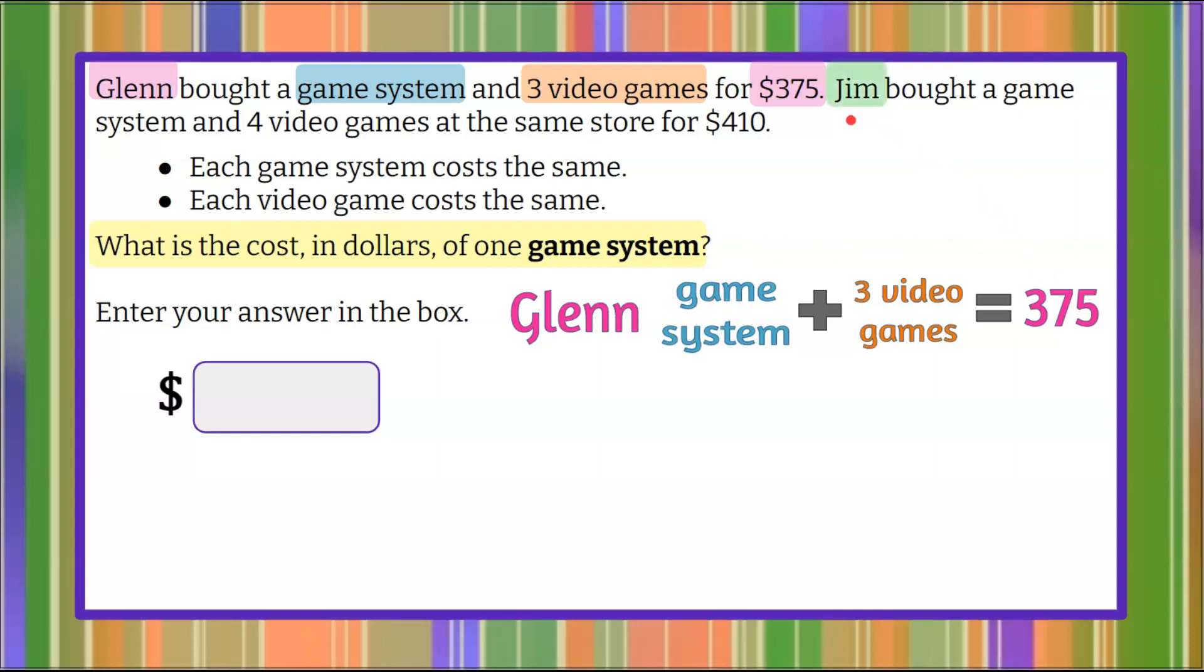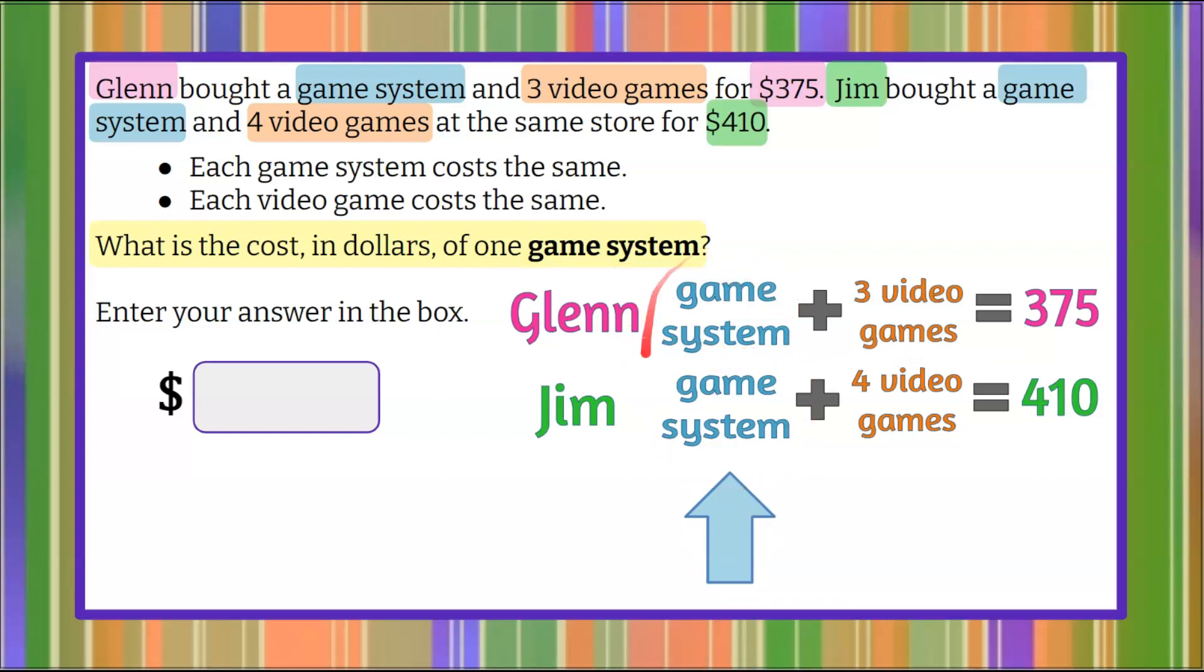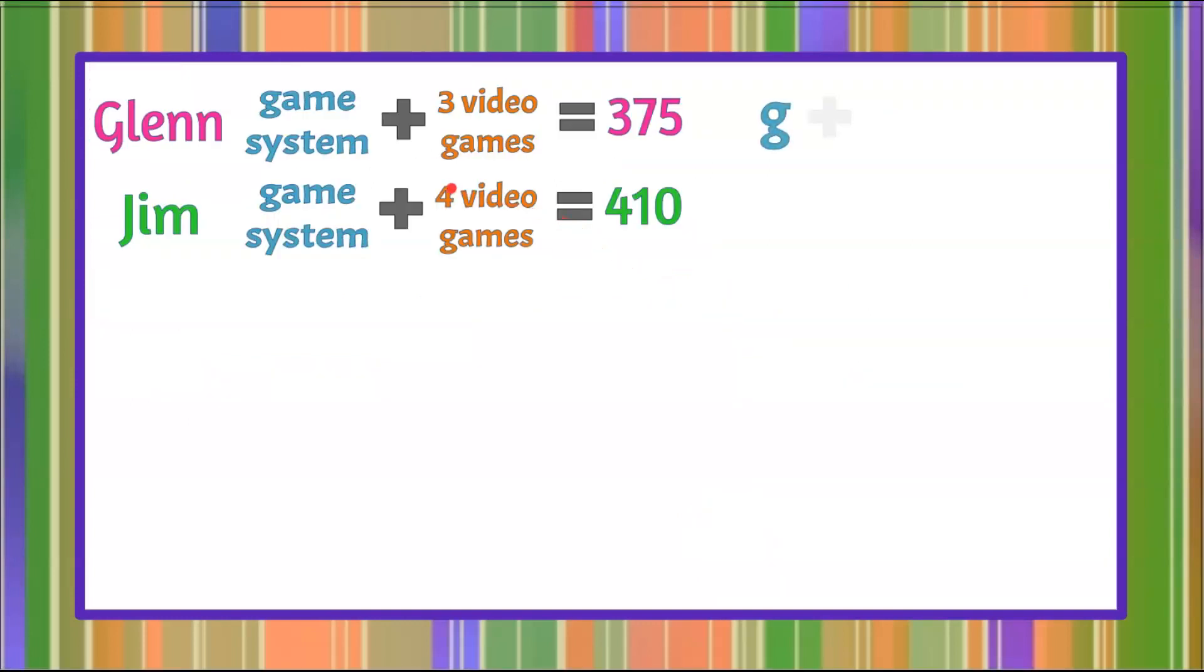Now let's go to Jim, and we're going to record what Jim did. Jim bought a game system, and he bought four video games, and he paid a total of $410. So now we know that we are wanting to find what one game system costs. This is our unknown that we're trying to find. And we're going to go on to the next slide here, bringing forward what we started with.